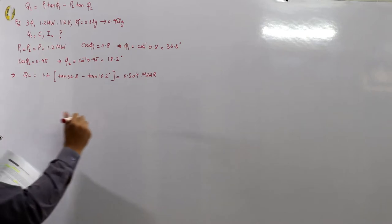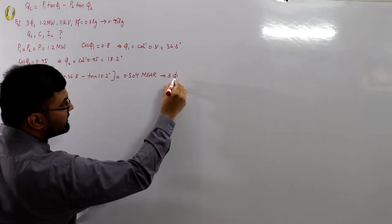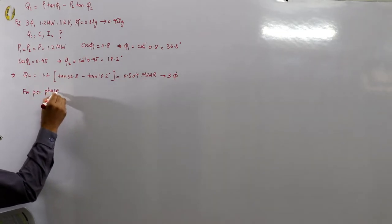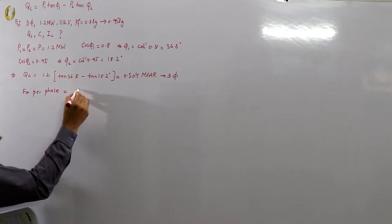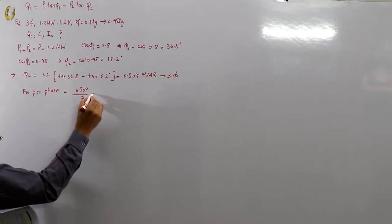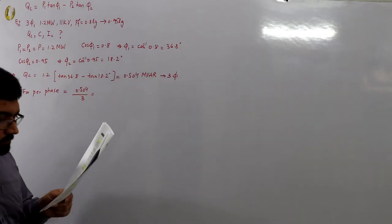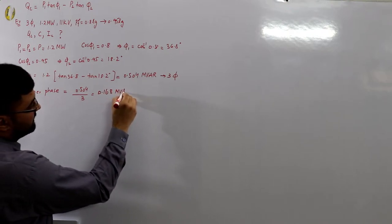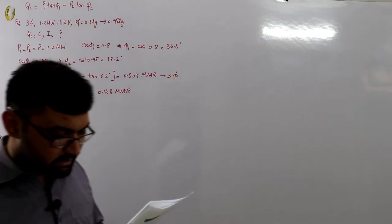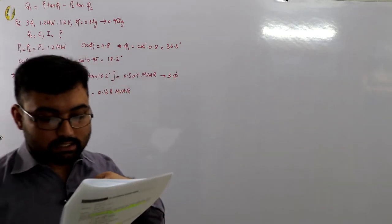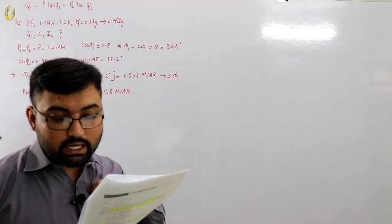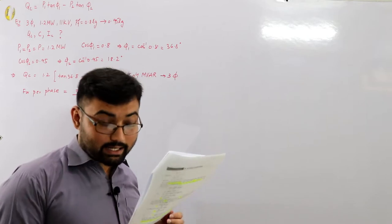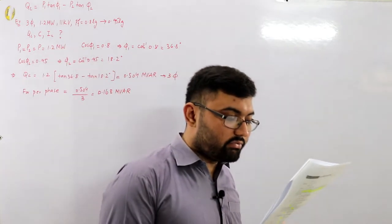For per phase, divide by three: 0.504 / 3 = 0.168 MVARs per phase. Since the capacitor is installed on the HT side, the voltage across each phase bank is 11 kilovolts, because in a delta connection the line voltage equals the phase voltage.